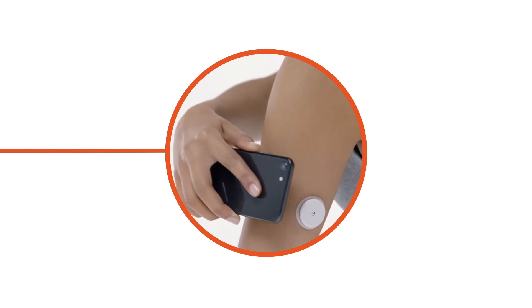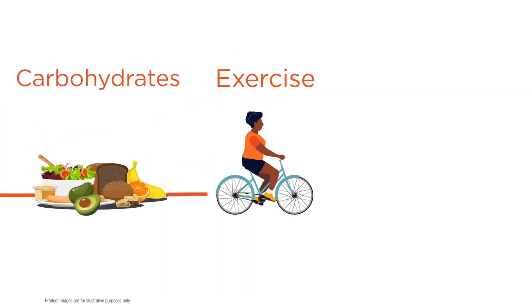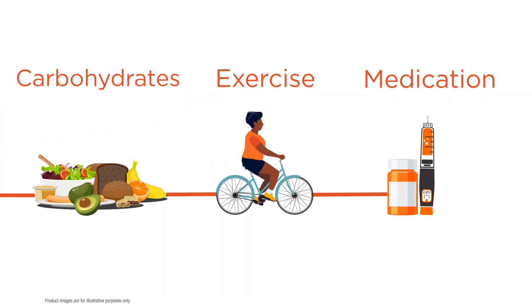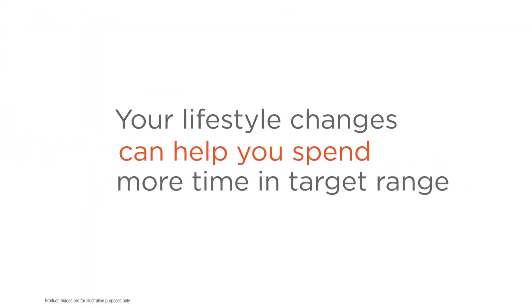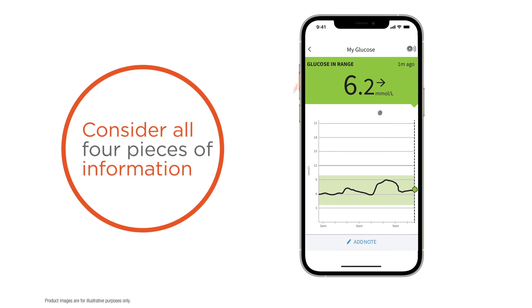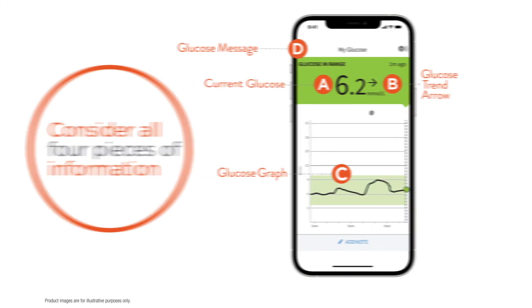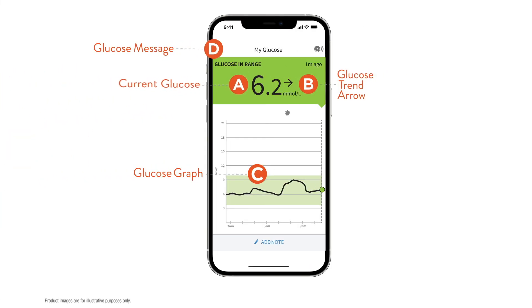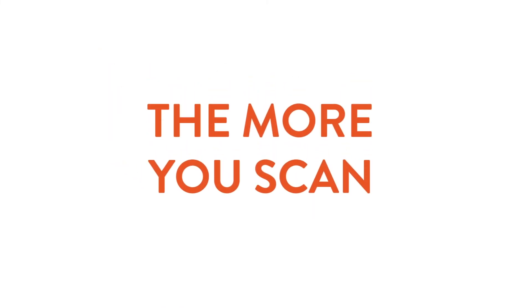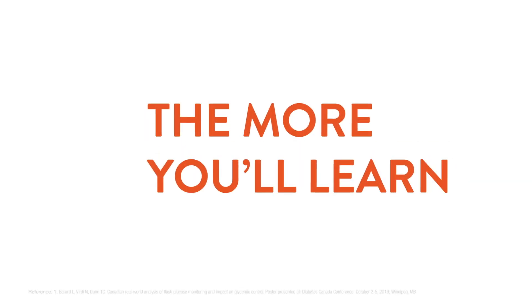You've been great at playing along, so let's summarize. It is important to scan often so you can learn how different foods, types of exercise and medications can change your glucose. Your lifestyle changes can help you spend more time in target range. And remember to look at all four elements of your scan: where you are, where you're going, and where you've been. The more you scan, the more you'll learn, and the better you'll do.